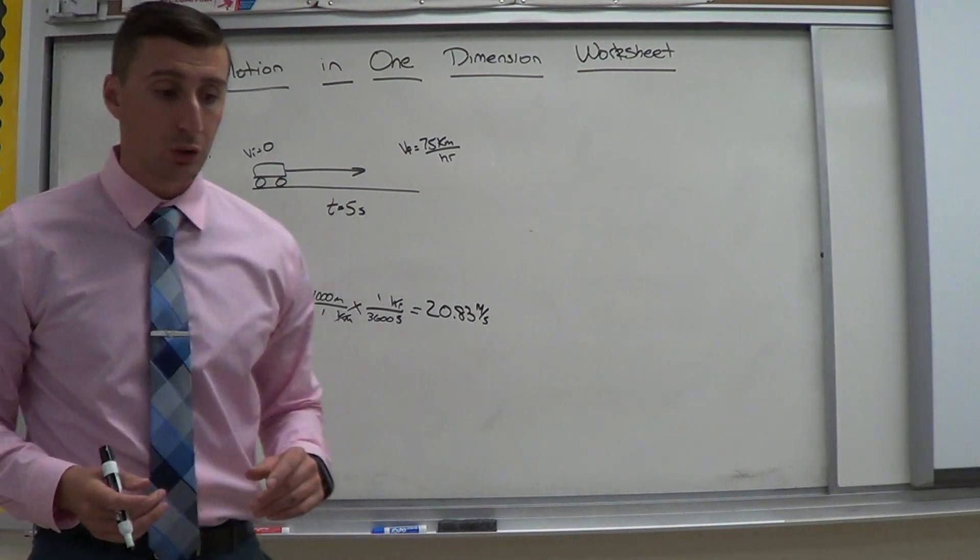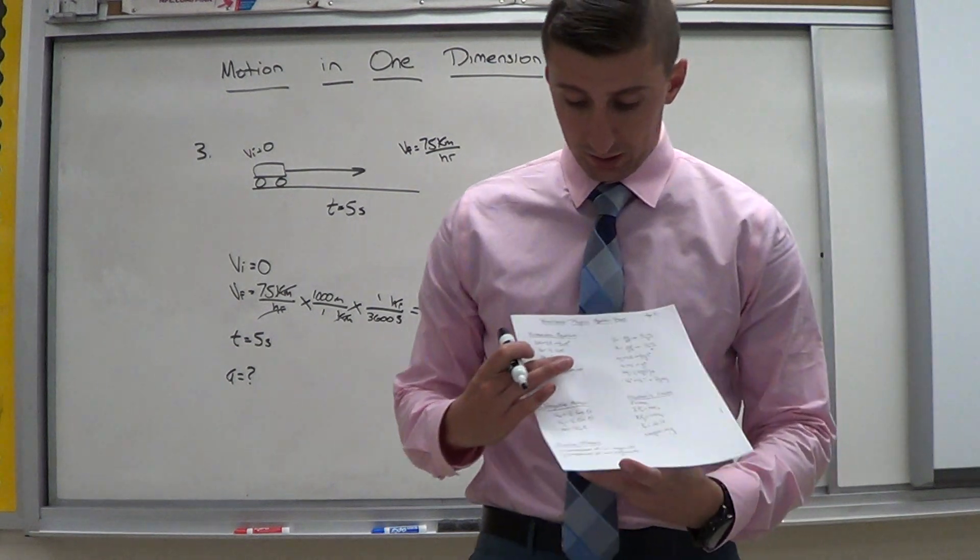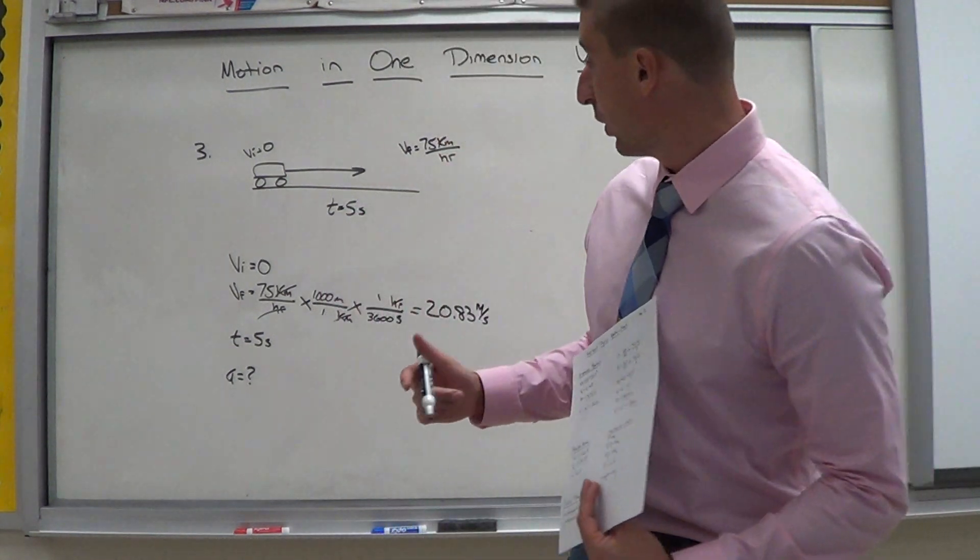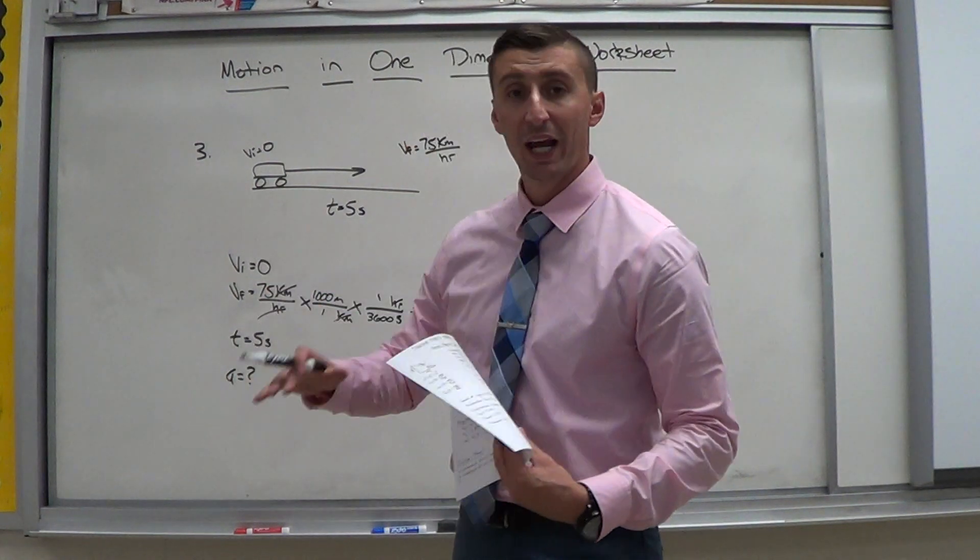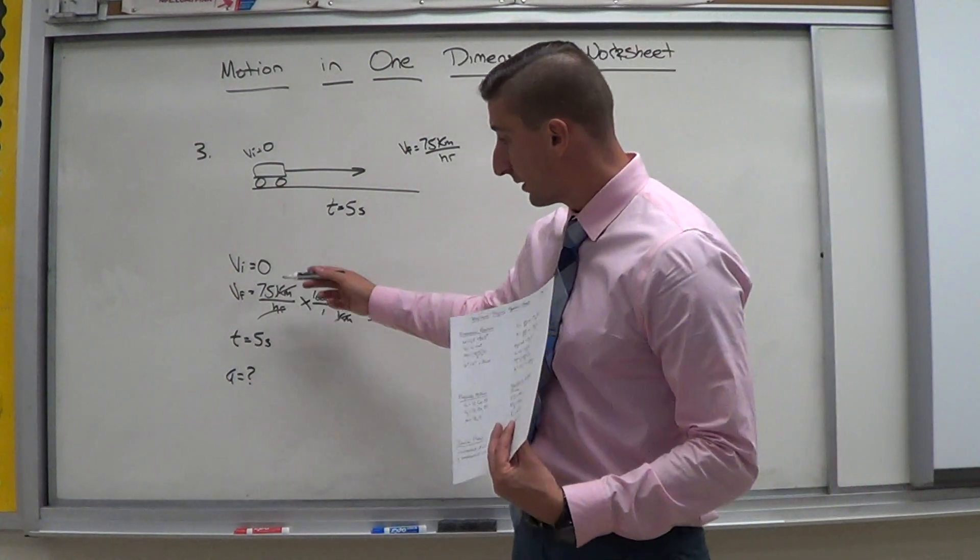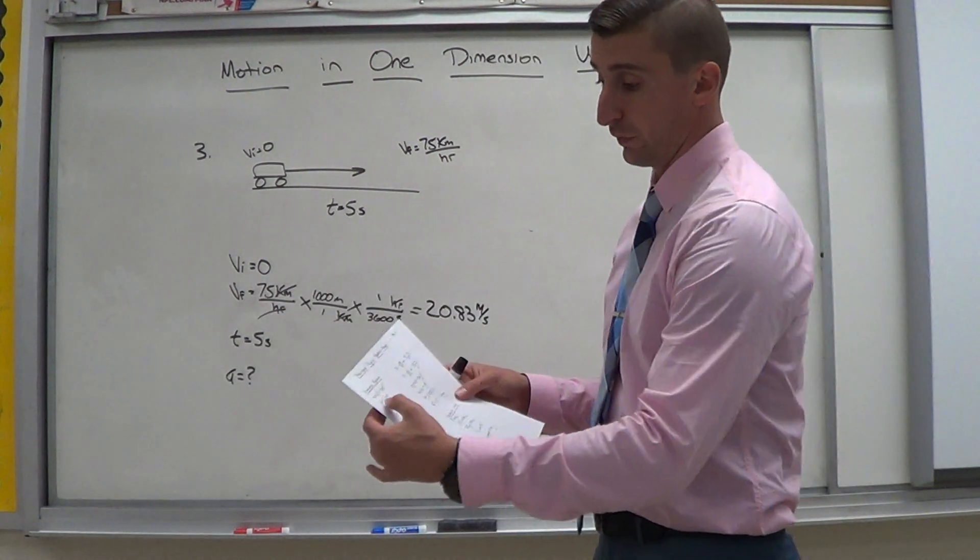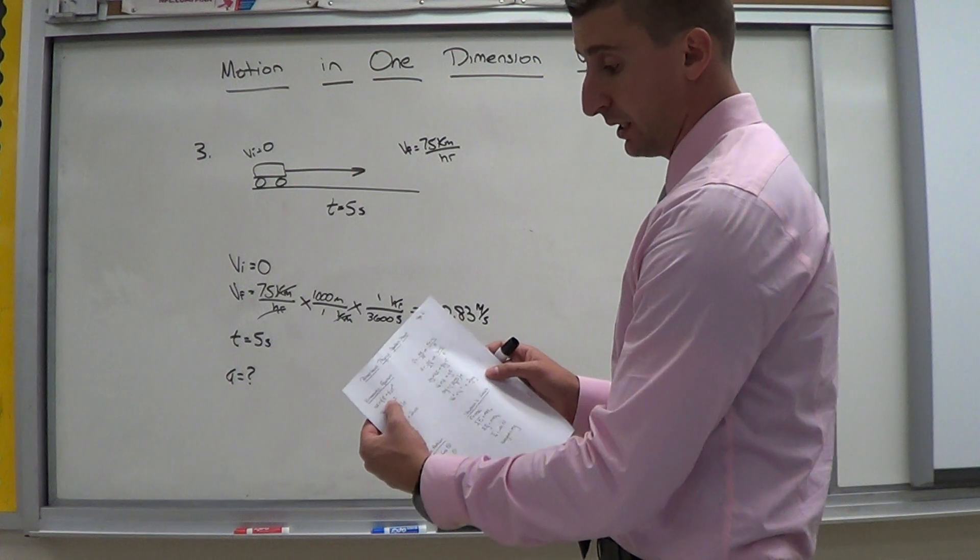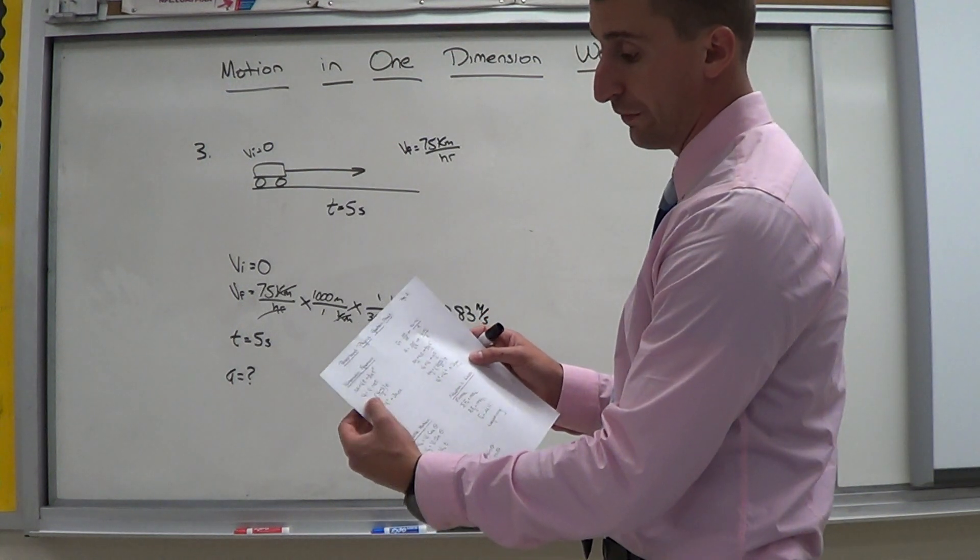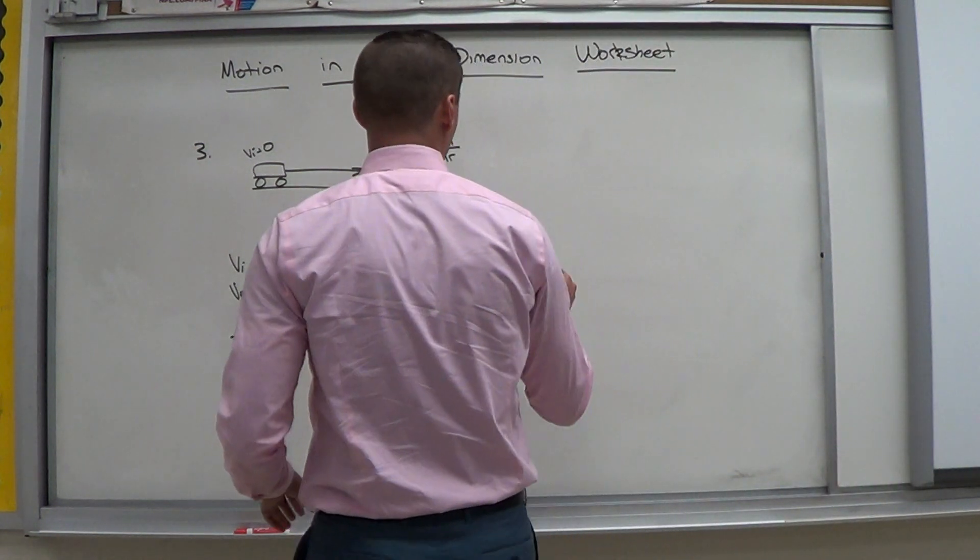So now what you want to do is go to your equation sheet that you have here. And go down these list of equations. And figure out which variable has all four of those variables in it. And that's it. Okay? So basically you want the one that does not have delta x in it. When I look at this. Okay? The first equation is delta x vi t plus one half a t squared. Well it has delta x. Can't use it. Next one. Vf equals vi plus a t. Perfect. I can use that. So write it out.